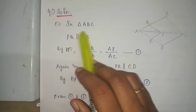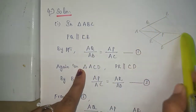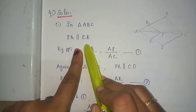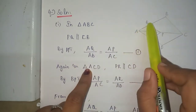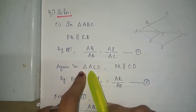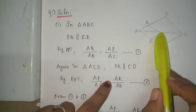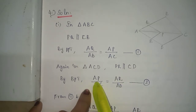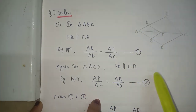Problem number 4 solution. Taking triangle ABC, PQ is parallel to CB. By basic proportionality theorem: AQ by AB is equal to AP by AC — equation 1. Next, taking triangle ACD, PR is parallel to CD. Again by basic proportionality theorem: AP by AC is equal to AR by AD — equation 2.